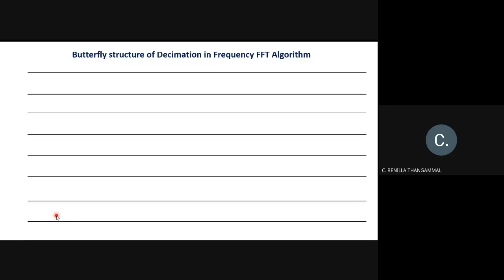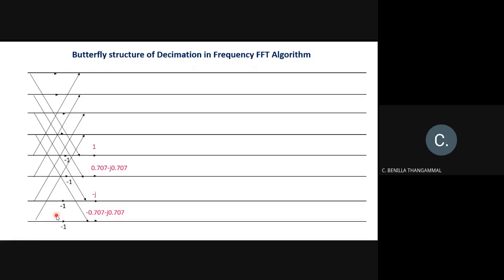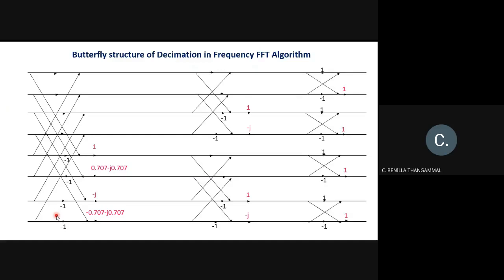The basic butterfly structure of the DIF FFT algorithm has the same number of stages as the DIT algorithm — three stages — since an 8-point DFT can be written as 2 to the power 3, giving radix-2 three stages. The first stage is 8-point, the second stage is 4-point, and the third stage is 2-point. The twiddle factors remain the same; only their placement differs. In DIF the input is in normal order and the output is in bit-reverse order: 0, 4, 2, 6, 1, 5, 3, 7.